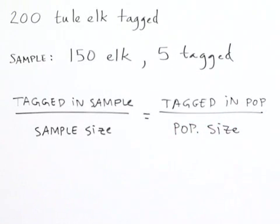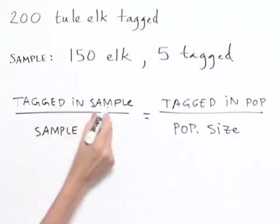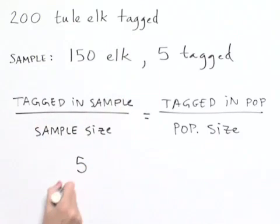So now, let's see what we're dealing with. We've got five that were tagged in our sample, so we're going to have a five in our numerator divided by our sample size of 150.